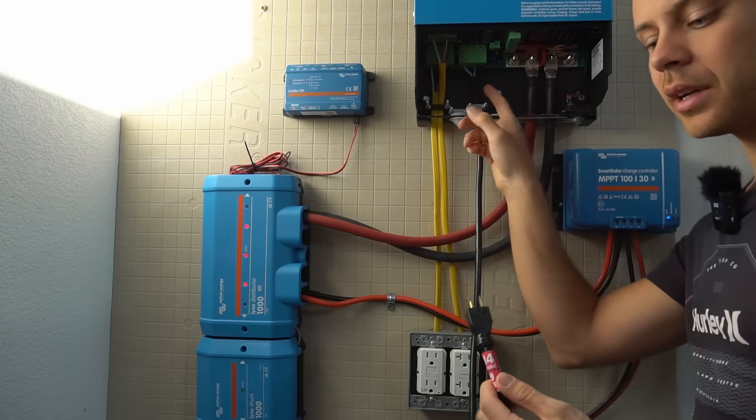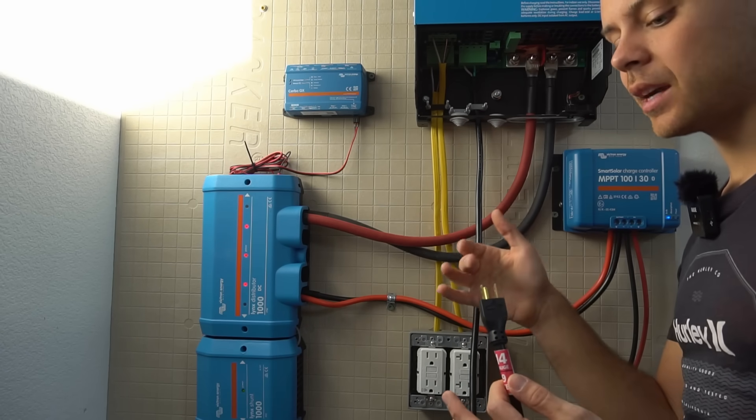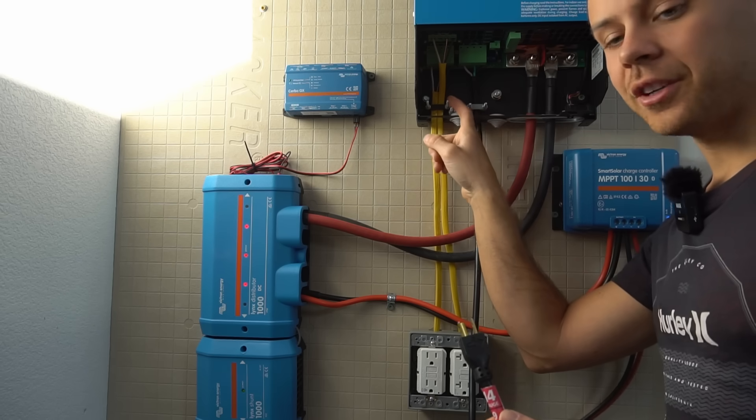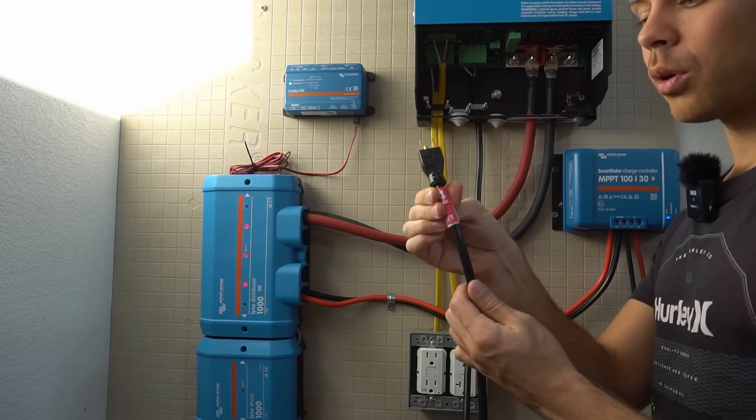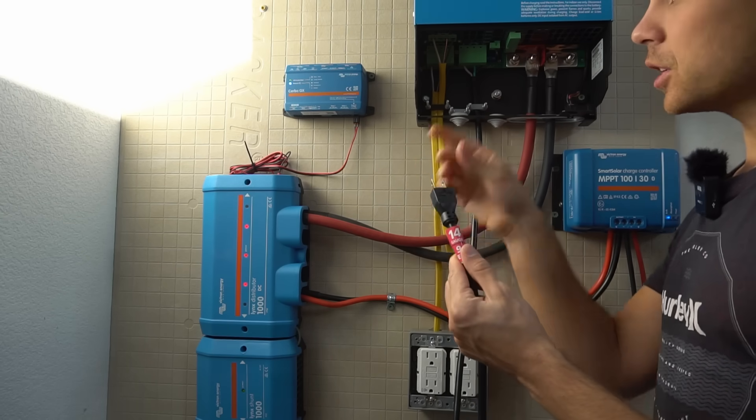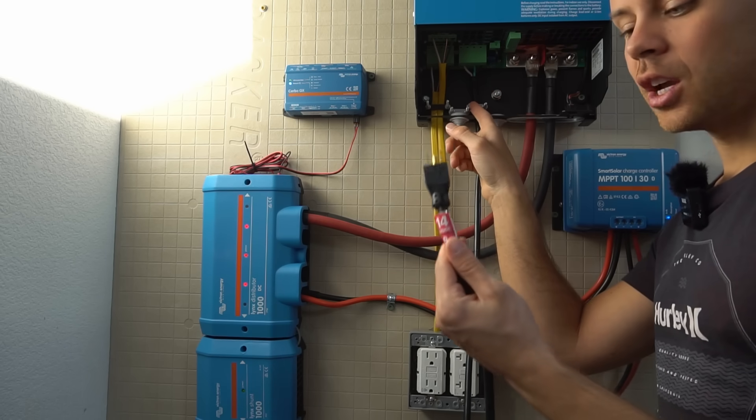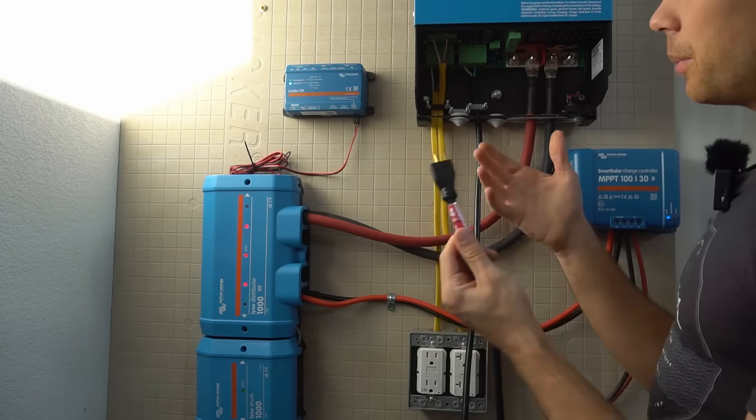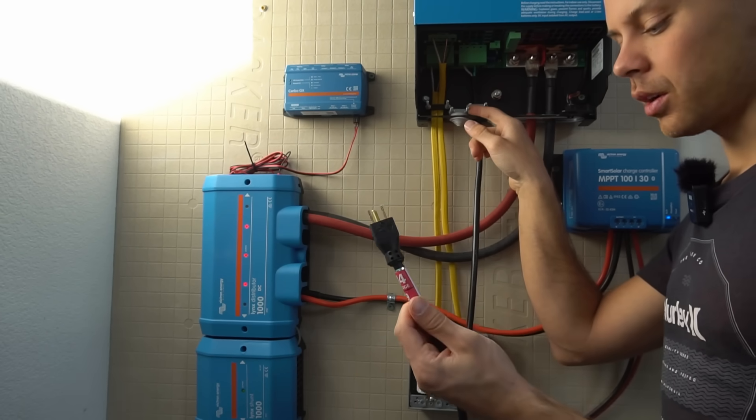Now this AC input can handle a lot of current. The maximum bypass or how much can go from the AC input to the AC output is 50 amps. So this cord is undersized but you can change the settings in the inverter so that this works great when you're using it as a battery charger. But you have to change those settings to be able to use this cord.